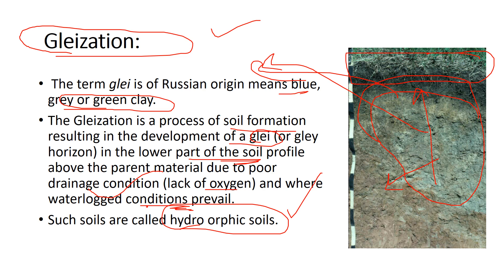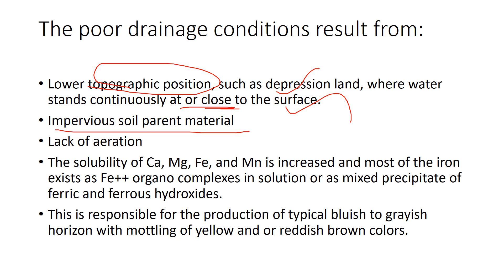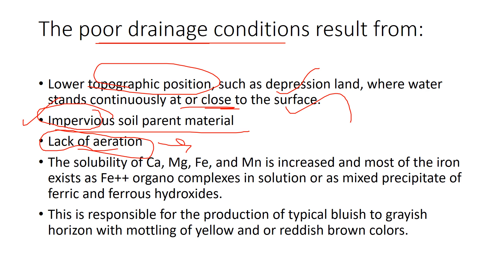Soils formed by gleization are otherwise called hydrophobic soils. This is mainly due to anaerobic conditions caused by waterlogging. Poor drainage results from topographic position — such as depression lands where water stands continuously close to the surface — and also from impervious soil parent material that does not allow water to escape. Lack of aeration, especially in marshy lands where anaerobic conditions prevail, also causes the soil to develop a greenish tinge.